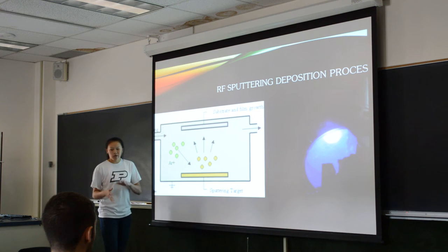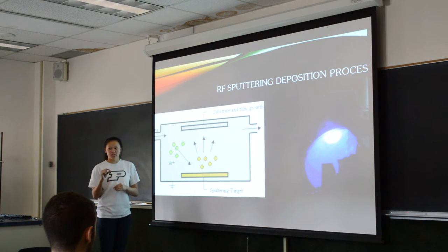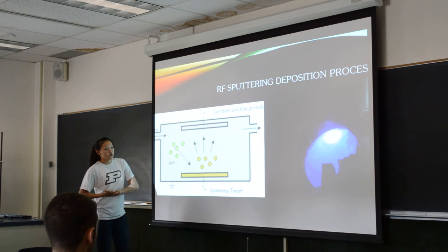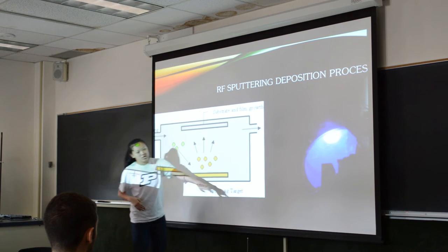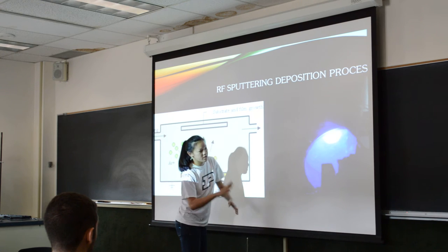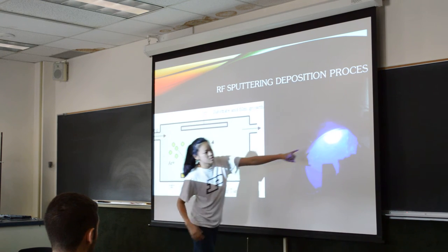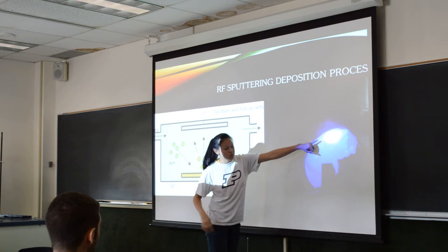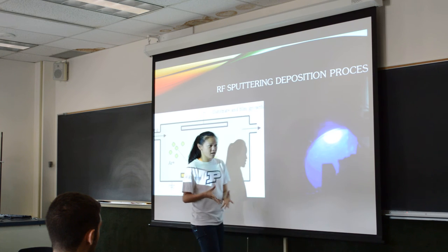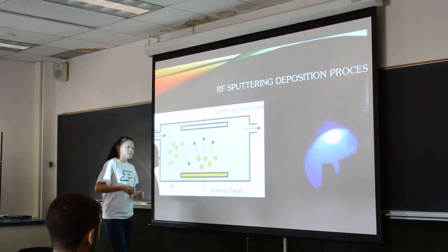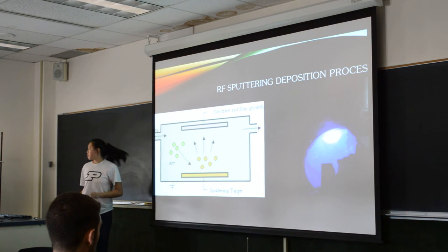That takes about an hour and a half, and you get a layer that's about a fraction of the thickness of your hair. That picture is inside our chamber through the window — you can see the sputtering target and you can see that it glows, emitting a purple light.